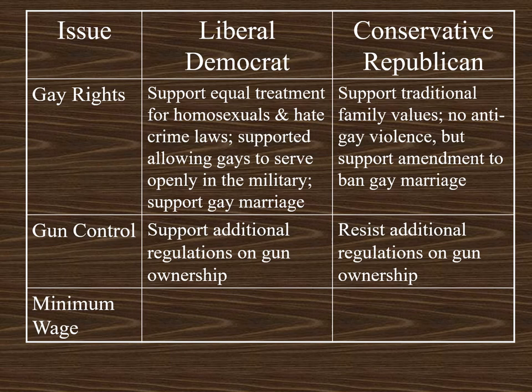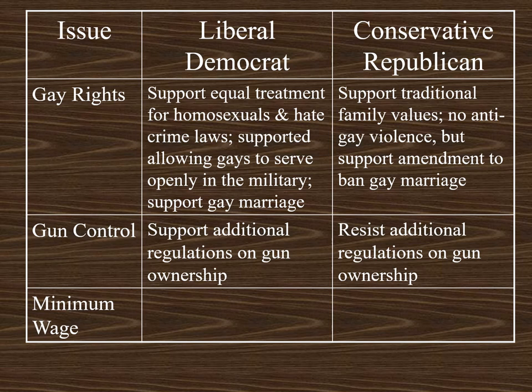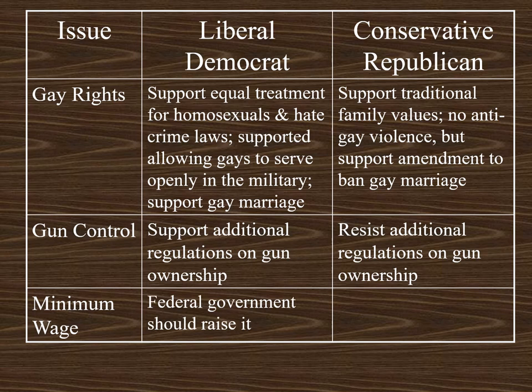Liberal Democrats would take the opposing point of view and would support additional regulations on gun ownership. One interest group that promotes more gun control is the Brady Campaign to Prevent Gun Violence. Democrats would tend to support expanded background checks, extended waiting periods, an assault rifle ban, and limits on high-capacity magazines. It's more sophisticated than just one side wanting to take away guns and another wanting to promote gun ownership.